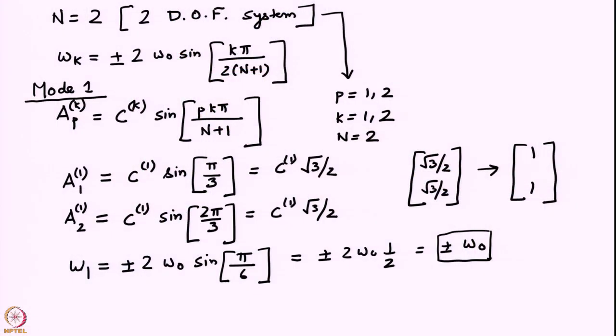These formulas — A_{p,k} = C_k · sin(pkπ/(N+1)) and ω_k = ±2ω₀ sin(kπ/(2(N+1))) — are very useful. Once you have them, you can write down the eigenmodes and eigen frequencies for any number of masses, whether N is 100 or 1000, as long as the boundary conditions do not change. If the boundary conditions change — for example, fixed-free — you will have to redo the analysis, as this example is specific to fixed-fixed boundary conditions.